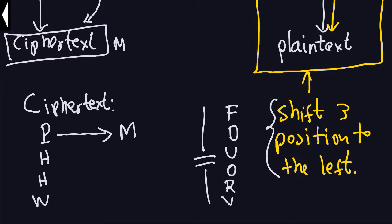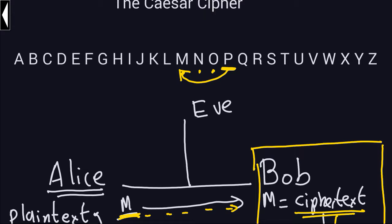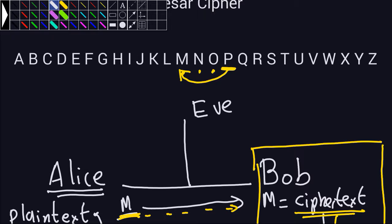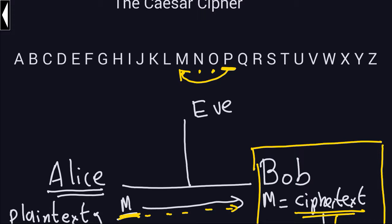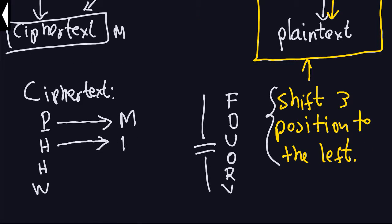Now we do the same with the letter H. H is going to be transformed by shifting three positions to the left. Going back to the alphabet, we find H and shift left: one, two, three — so the letter H is transformed into the letter E.